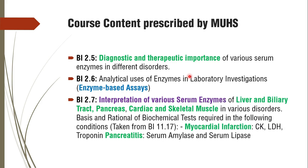The course content for BI 2.7 is specifically delineated. It covers interpretation of various serum enzymes of liver and biliary tract, pancreas, and cardiac and skeletal muscles in various disorders — covering four systems: hepatobiliary, pancreas, cardiac, and skeletal muscle. Additionally, BI 11.17, which was related to the basis and rationale of biochemical tests, will now have its content on myocardial infarction and pancreatitis-related investigations covered under BI 2.7 due to overlap of course content.